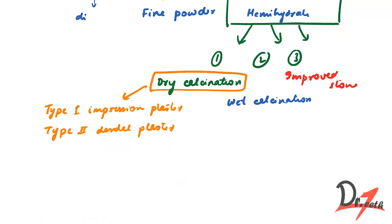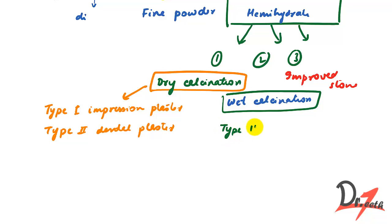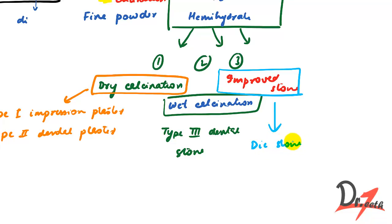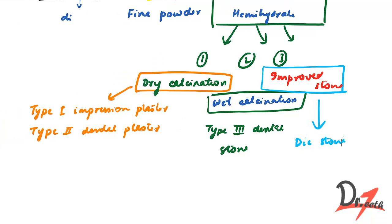In wet calcination, we get type three dental stone. And by the improved stone method, we get die stone. Now let's go through each of these one by one.